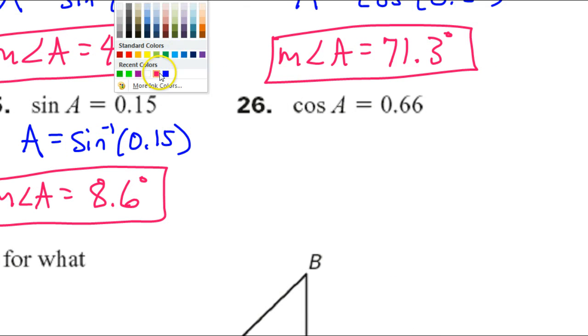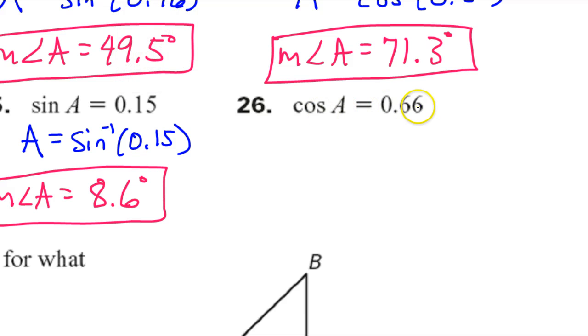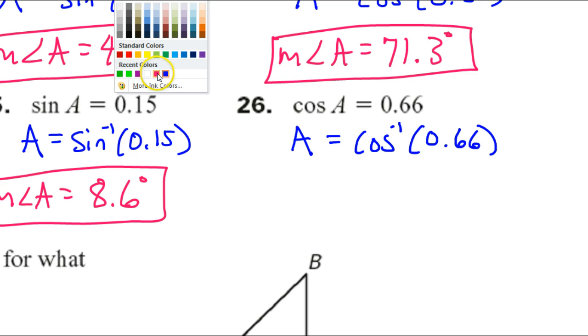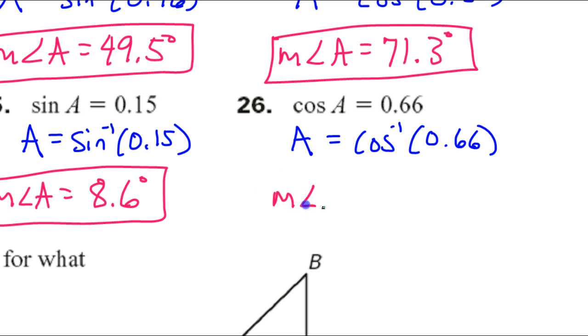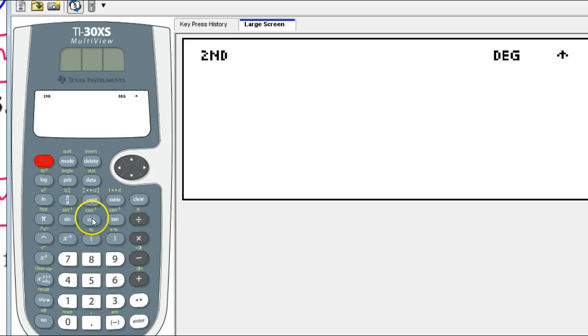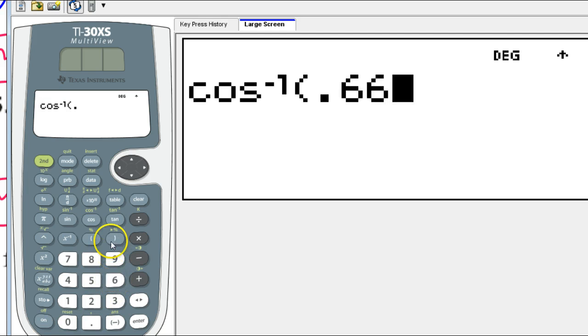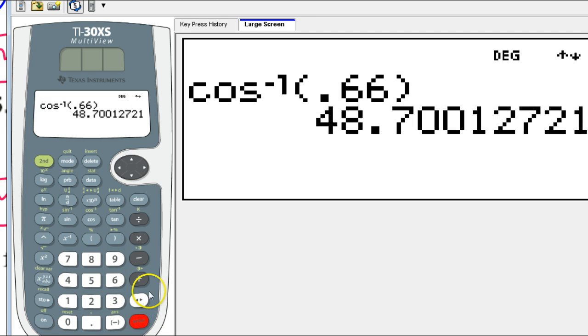Okay, uno mas. One more. If you're given the cosine of an angle and you want to find the angle, you could use the inverse cosine. The measure of angle A, 48.7 degrees.